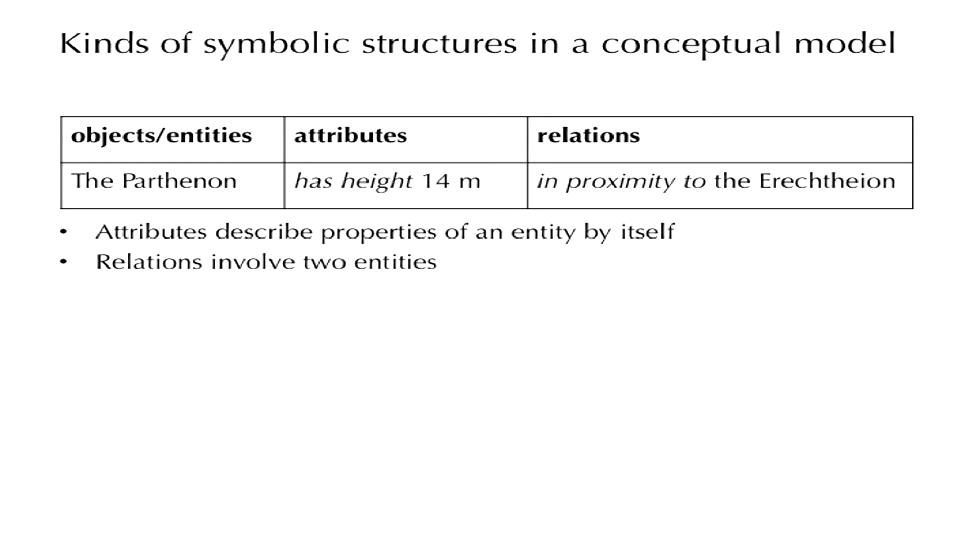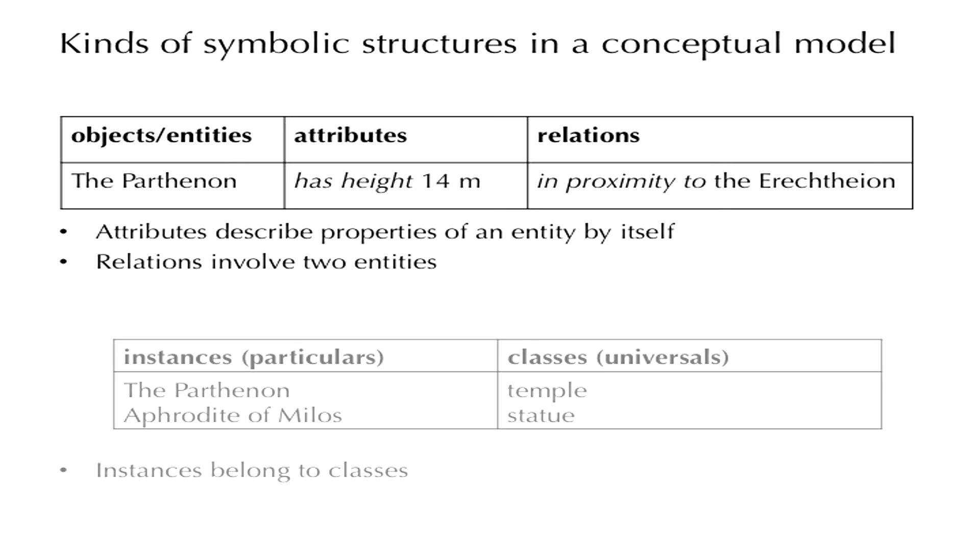So to recapitulate, attributes describe properties of an entity by itself, and relations always involve two entities. Now another way of distinguishing these symbolic structures is to distinguish between what we call instances and classes. Instances are atomic entities, and classes are sets of entities that are of the same kind. So the Parthenon is an instance, whereas temple denotes a class. Aphrodite of Milos is an instance, but statue is a class. And the Parthenon is an instance belonging to the class temple, and the Aphrodite of Milos is an instance belonging to the class statue. Instances are also called particulars, and classes are also called universals. And as I said before, the relationship between instances and classes is that instances belong to the appropriate classes, which means that they have the characteristics that are implied by that class. The classes are actually operating, they are behaving as carriers of characteristics which the instances of that class share.